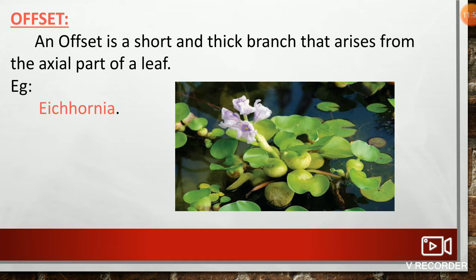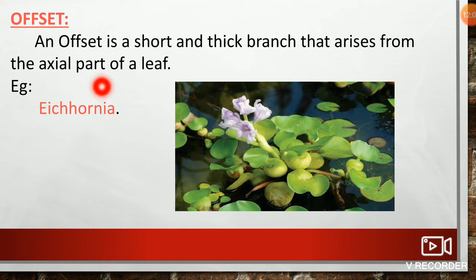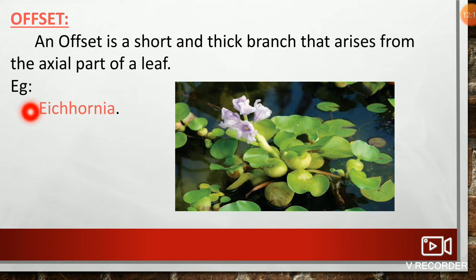The last type of subareal modification is offset. An offset is a short and thick branch that arises from the axial part of a leaf. For example, Eichhornia.